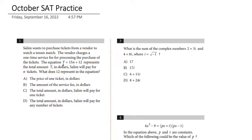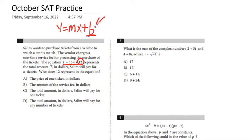When you see t equals 15n plus 12, what should immediately pop into your mind is y equals mx plus b. In this case, the 12 is in the same position as our b. And we need to remember that b is our starting point or y-intercept.